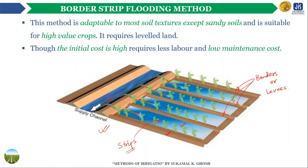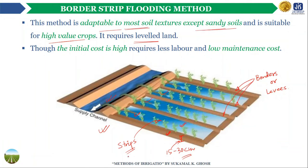The height of the borders or levees is 15 to 30 cm. The border strip flooding method is most suitable for high-value crops and requires leveled or relatively flat land. This method is adaptable for most soil types except sandy soil. The main disadvantage of the border strip flooding method is the high initial cost, though it requires less labor and low maintenance cost.